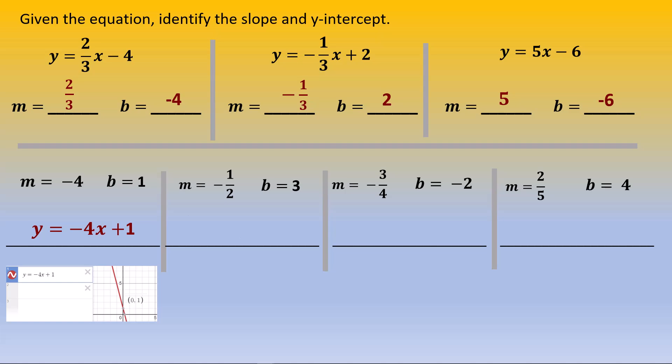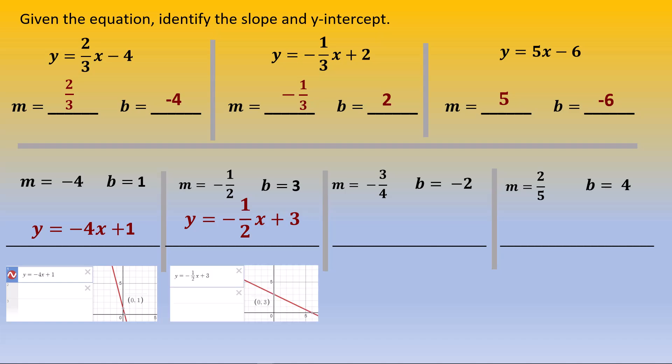In this next example, m is negative 1 over 2 and b is 3. And so the line passes through the point 3 on the y-axis and goes down 1 and over 2, with the slope of negative 1 over 2. The equation is y equals negative 1/2 x plus 3.